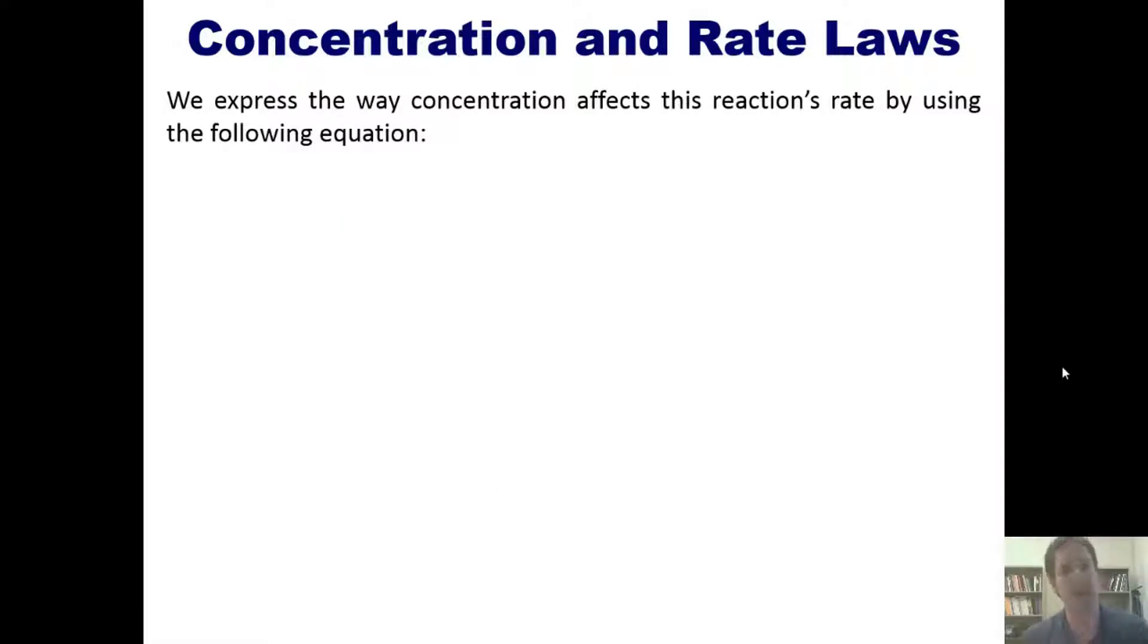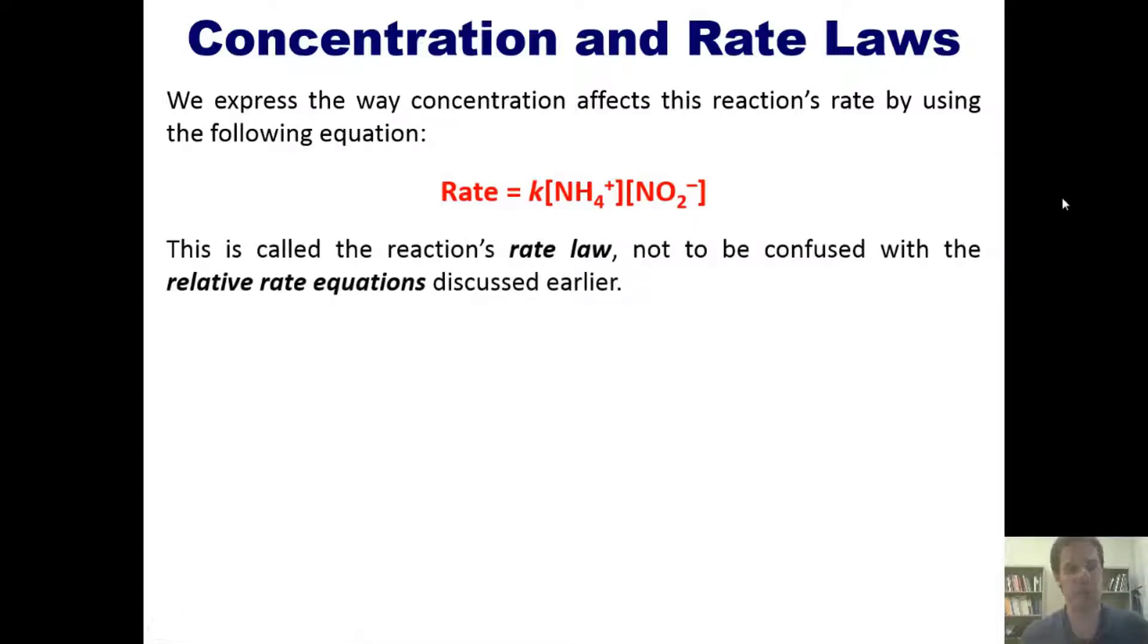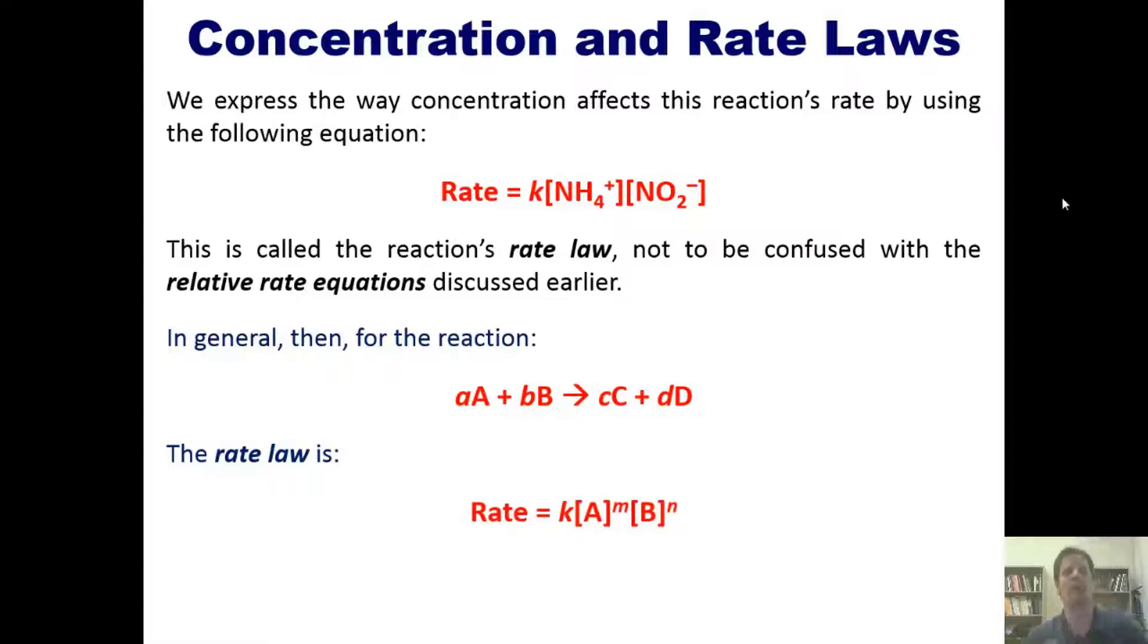Okay, so that took a lot of explaining, but let's see if we can learn more from it. We express the way concentration affects a reaction's rate or speed by using this equation: Rate equals K times the concentration of ammonium multiplied by the concentration of nitrogen dioxide. This is called this particular reaction's rate law, which is not to be confused with the relative rate equations that we discussed earlier. In general, then, for a reaction such as this generic one, the rate law will be equal to K multiplied by the individual concentrations of the reactants raised to some numbers M and N. K, by the way, is called the rate constant, which will vary from one reaction to another. Please notice that the products do not appear anywhere in the rate law. This, once again, is different from the relative rate equation that we discussed earlier.